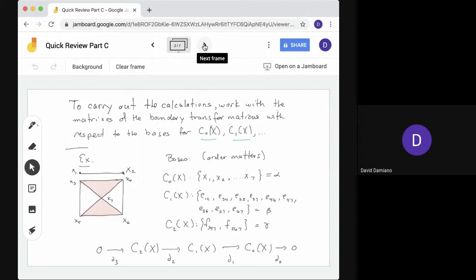For c1, it's not c0, sorry, vertices. It's natural just to order the vertices as we see them, x1 up to x7.